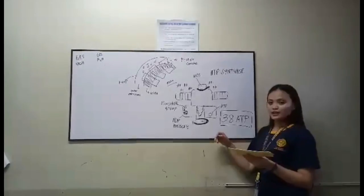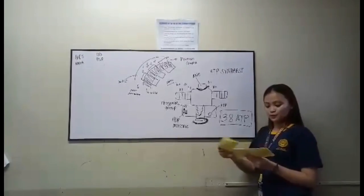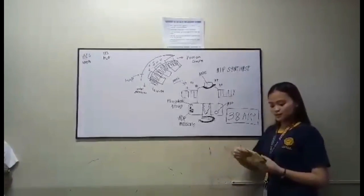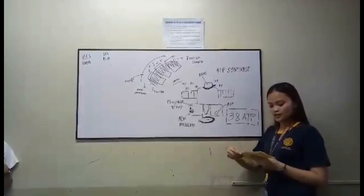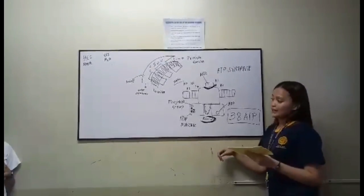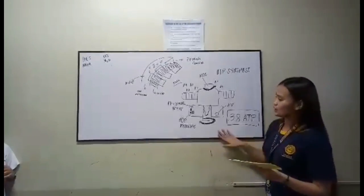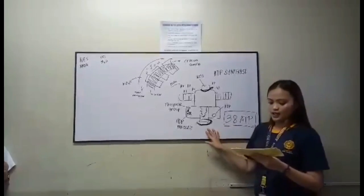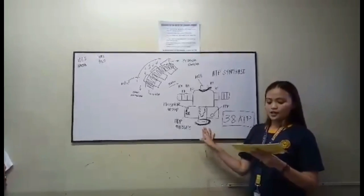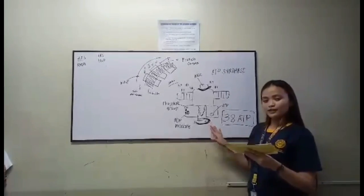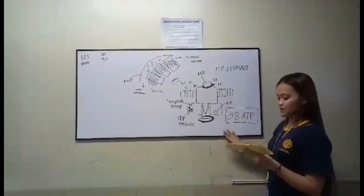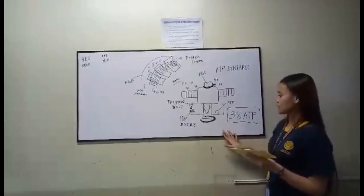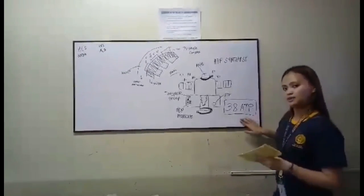From this process, 34 ATPs will be produced. In addition to the 34 ATP from the Electron Transport Chain, there are 4 ATPs from the Krebs cycle and glycolysis, resulting in a total of 38 ATPs.